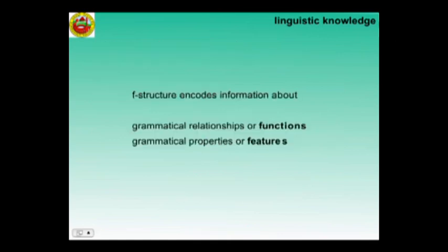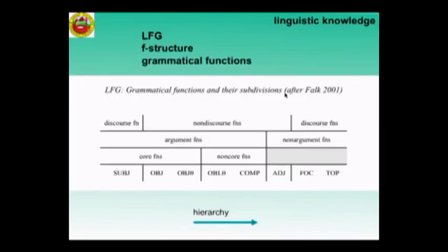The F structure encodes information about grammatical relationships or functions and grammatical features. The functions are subject, object, indirect object, the family of obliques, complement, adjunct, focus, and topic. There are two important dichotomies amongst these grammatical functions: the first is between argument functions and non-argument functions. The argument functions are governed by the predicate; the non-argument functions bind their expression to something other than the argument roles.